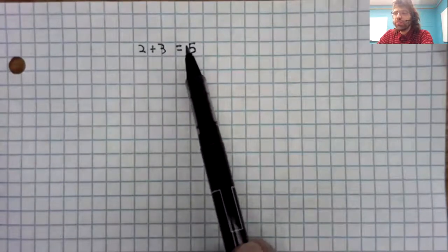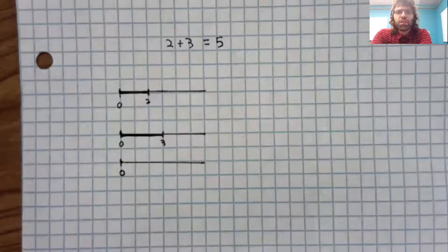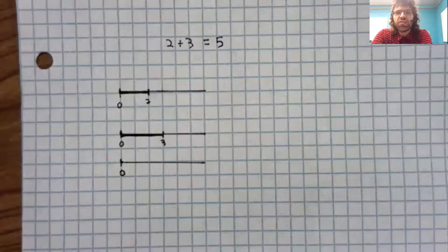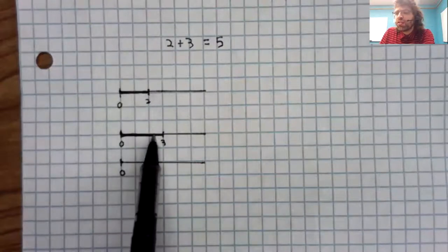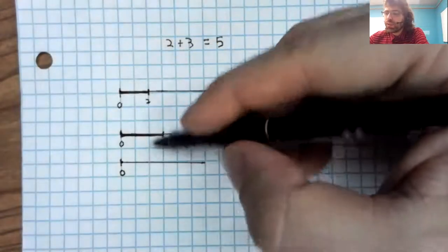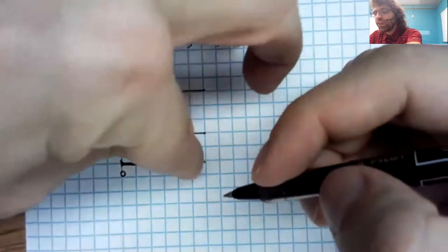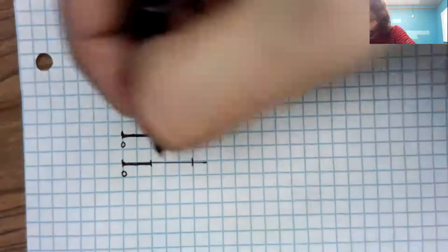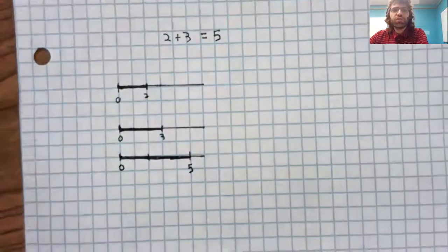Say we have the statement two plus three equals five. Well, this two, this three, and this five can all be visually represented on a number line. Ordinarily, you'd represent numbers as points, but you could also think of numbers as line segments. Two is the length of this line segment. Three is the length of this line segment. Two plus three is five. And that's visually if you take this line segment and now you take this line segment and you move it down here, you get the line segment representing five.